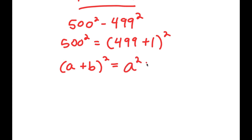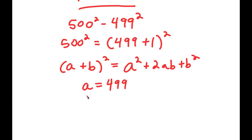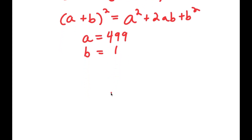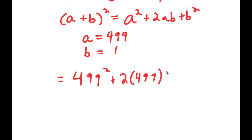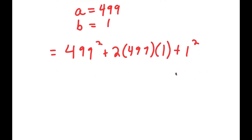If I have something in the form (a + b) squared, this is equal to a squared plus 2ab plus b squared. In this case a is 499 and b equals 1, so this turns into 499 squared plus 2 times 499 times 1 plus 1 squared.